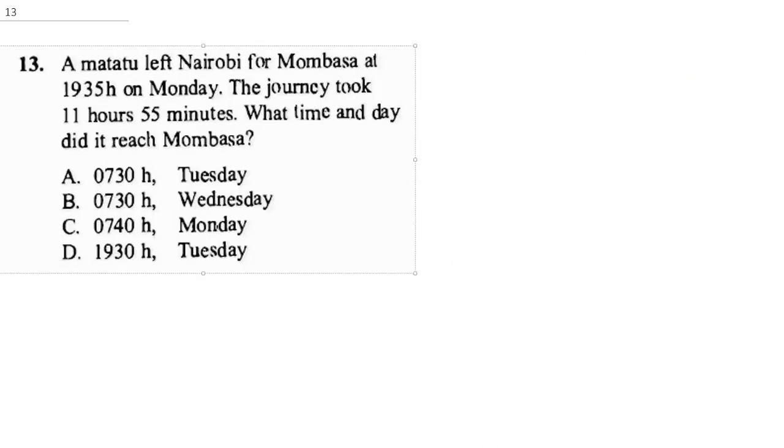We're going to be going to question 13, which says a matatu left Nairobi for Mombasa at 1935h on Monday. The journey took 11 hours, 55 minutes. What time and day did he reach Mombasa? The easiest way to solve this question is just to do 1935h plus 11 hours, 55 minutes. If you can sum this up, you will get your answer.